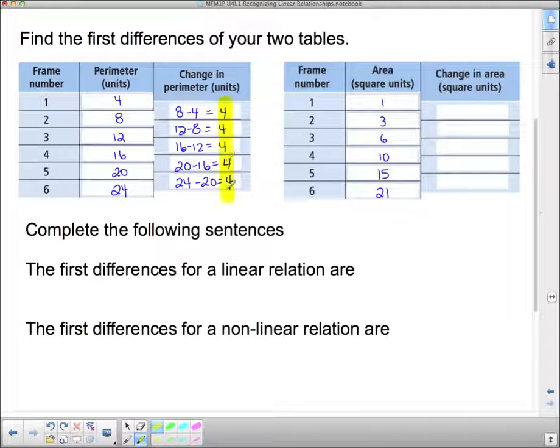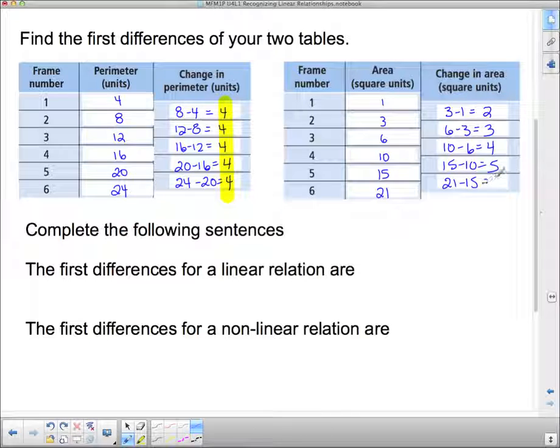Now, if you get the case where all of these differences are exactly the same number, then we know we have a linear relationship. We know there's a constant rate of change. Or in the case over here, if we subtract them, 3 subtract 1 equals 2. 6 subtract 3 equals 3. 10 subtract 6 equals 4. We know now that it's definitely not linear. There is a pattern to it, but it's not linear. 15 subtract 10 equals 5. And 21 subtract 15 equals 6. So when we look at this thing, we know that it is nonlinear because the first differences, and now I'm not just saying what it goes up by, I'm using the math term first differences, are not the same.